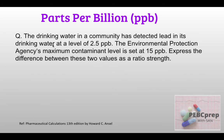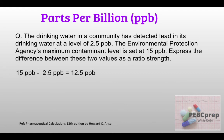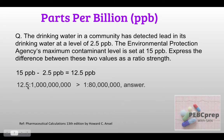Next question: drinking water in a community has lead detected at 2.5 parts per billion. The EPA's maximum contaminant level is 15 parts per billion. Express the difference between these two values as a ratio strength. We calculate 15 ppb minus 2.5 ppb, which gives 12.5 parts per billion. Writing 12.5 is to 1 billion and solving gives a ratio strength of 1 is to 80,000,000.